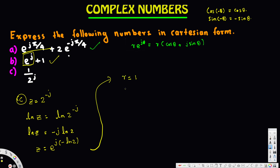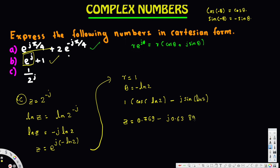Now we have the form r·e^(jθ), where r equals 1 and theta equals negative ln(2). Applying Euler's identity and using the even/odd trig identities, cosine of negative ln(2) equals cosine(ln(2)), and sine of negative ln(2) gives a negative sign in front. Computing these values, z equals 0.769 minus j·0.6389. This is our final answer.